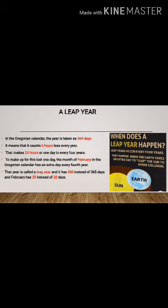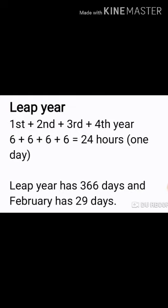So then, what is a leap year? In the Gregorian calendar, the year is taken as 365 days. It means that it counts 6 hours less every year. Every year 6 hours is counted less. 6 hours in the first year, 6 hours in the second year, 6 hours in the third year and 6 hours in the fourth year. When we add all this hours, we get 24 hours. That is one day.